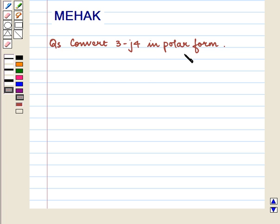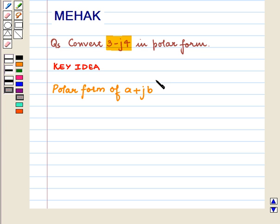We know that polar form of a plus jb is equal to r into cos theta plus j sin theta.